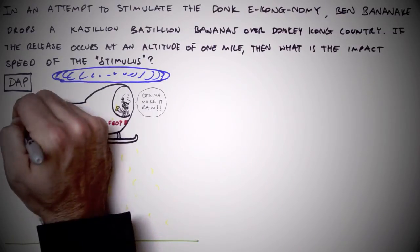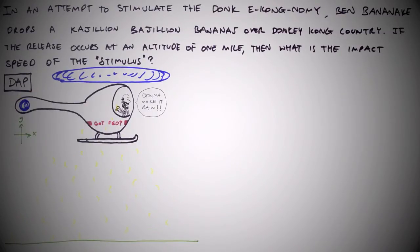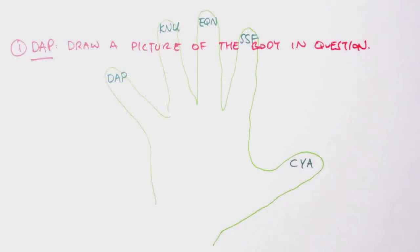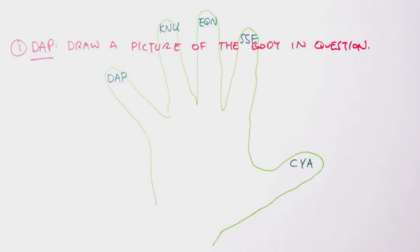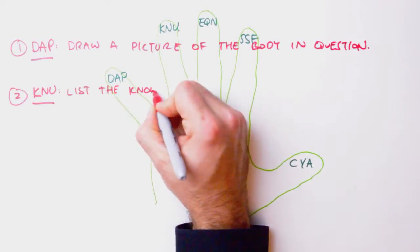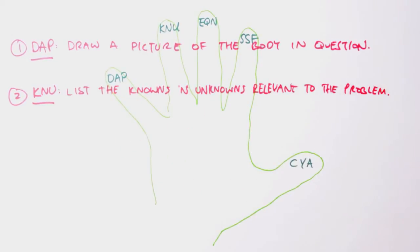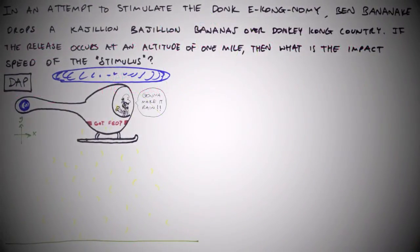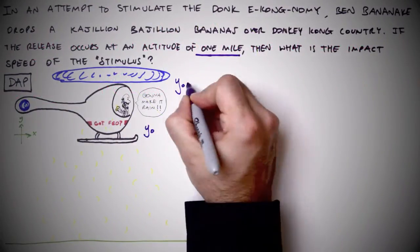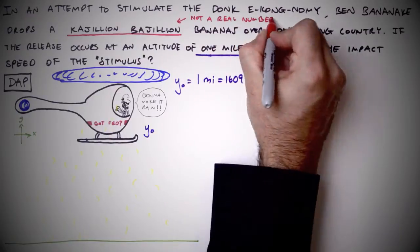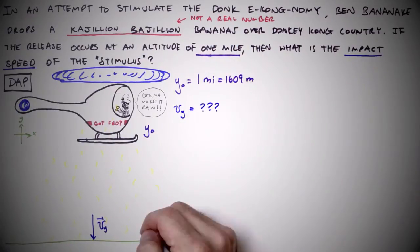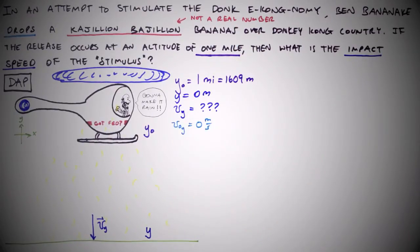Step two: list the knowns and unknowns relevant to the problem. We will likely need all of the numerical values given in the wording of the problem and possibly a few more from an appendix or a Wikipedia entry. These numerical values will be implemented in the eleventh hour of our problem solving.